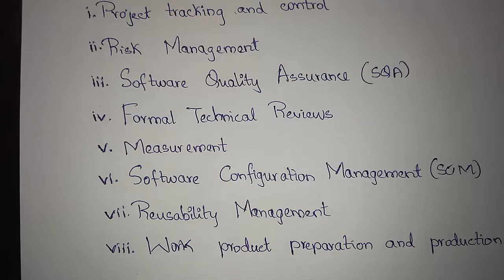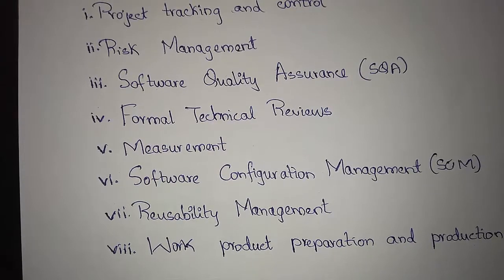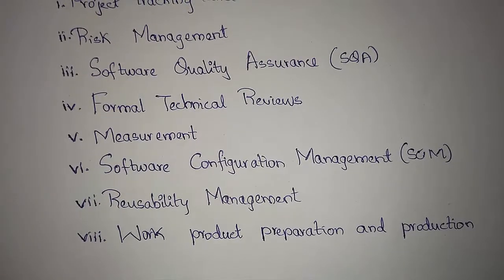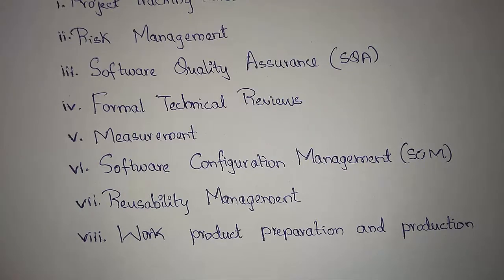Software configuration management manages changes throughout the software process. Reusability management establishes mechanisms to achieve reusable components, since a single application can't be used only once. Work product preparation and production covers activities required to create work products like models, documents, and logs, which are necessary to make the product usable and customer-friendly after development is complete.